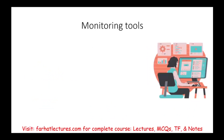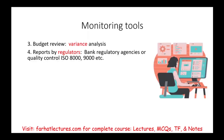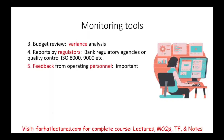What are some additional monitoring tools? Budget reviews: we look at variances — whether sales were more or less than expected, expenditures more or less, material expense, labor hourly rate, and so on. We could look at reports by regulators; for example, if we are a banking agency, regulatory agencies from the government will review our numbers. Quality control — if we are in manufacturing, ISO 8000 or ISO 9000. And importantly, get feedback from people working with the company, make sure you listen to them, and give them an 800 number they can call anonymously.